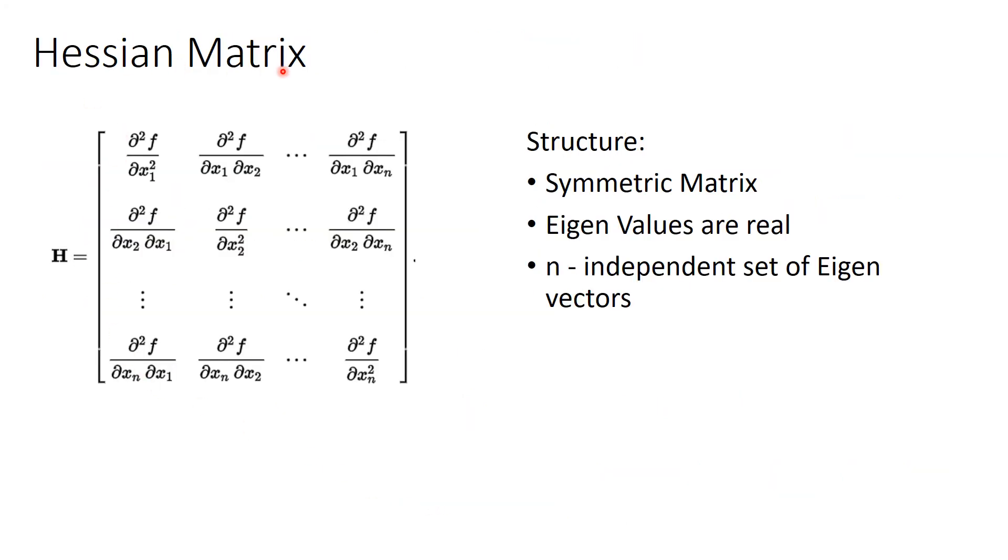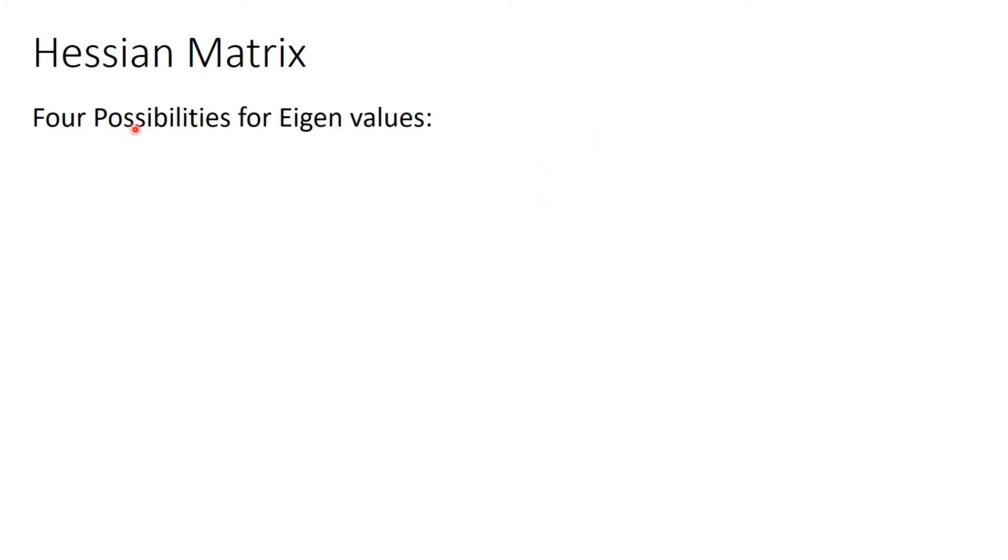Hessian matrix. Hessian is a square matrix which contains second order partial derivatives and its eigenvalues are real. The four possibility for eigenvalues is as follows.